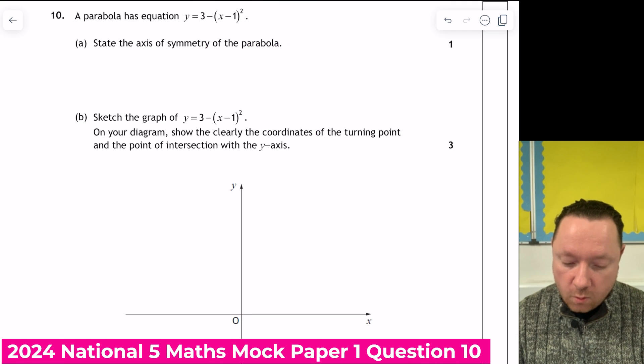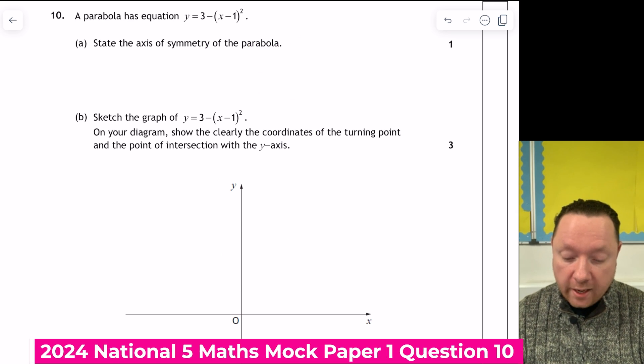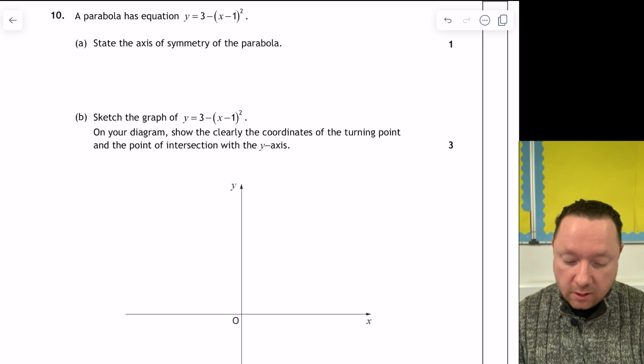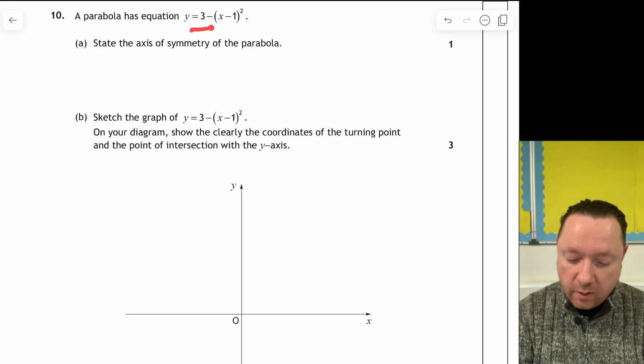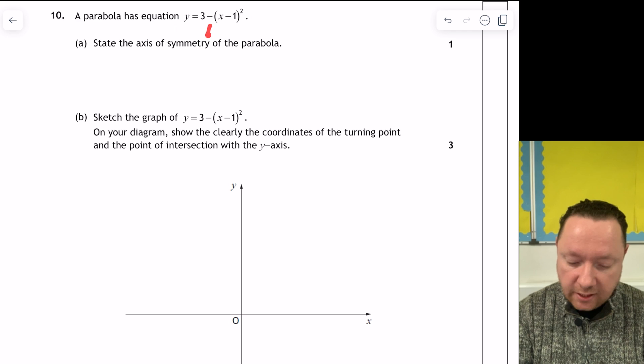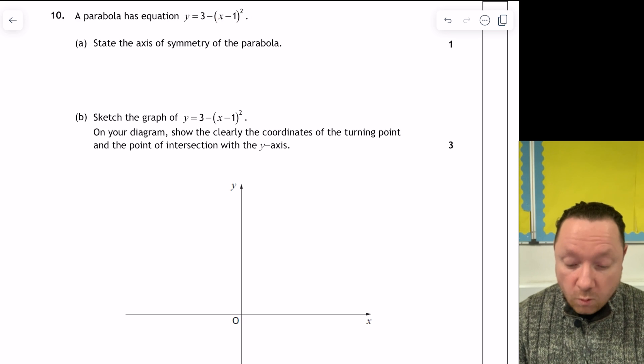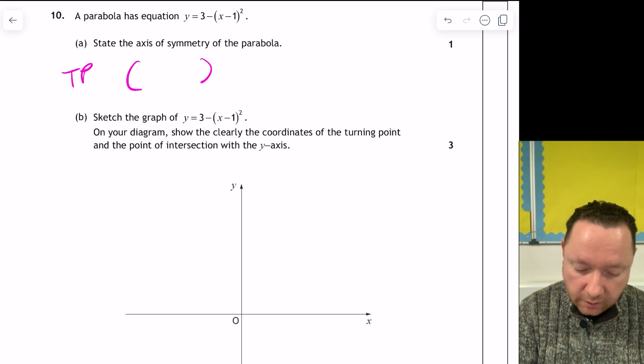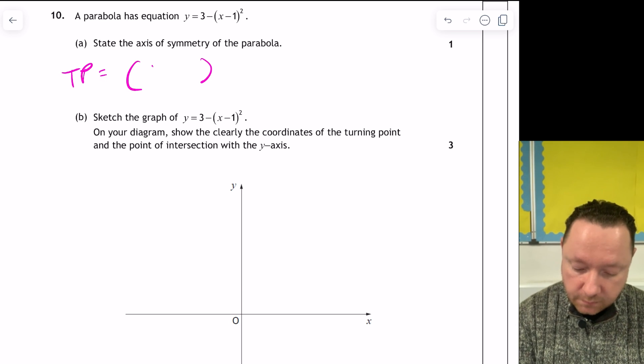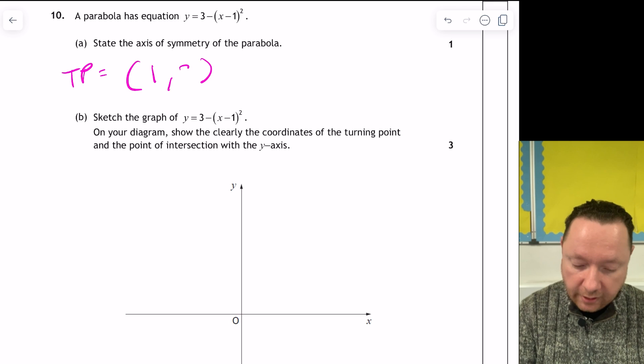Question 10. A parabola has equation y equals 3 minus x minus 1 squared. State the axis of symmetry of a parabola. I told you the answer to this if you watched it in the previous video. This is completed square form. It looks a little bit different than normal. And that's only because there's a minus here. But if it's a bracket squared and then a number, it is in completed square form. And the turning point is always the same. So the first number of the turning point, I like this as the turning point, is 1. Because x minus 1, the opposite of minus 1 is 1. And the other number is 3. So it's just 1, 3. So the axis of symmetry is x equals 1, the first number.